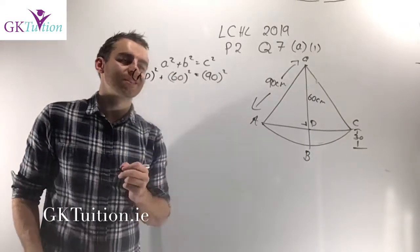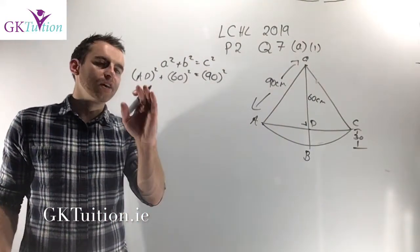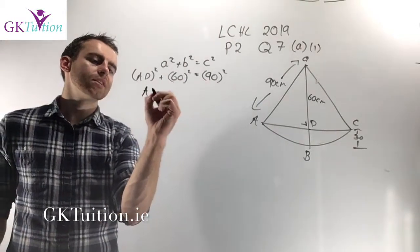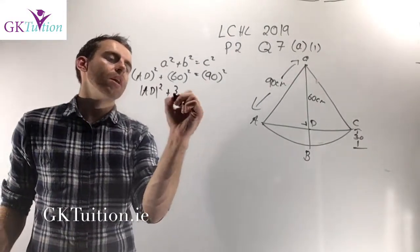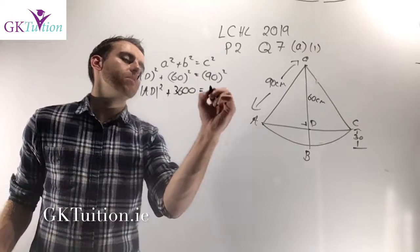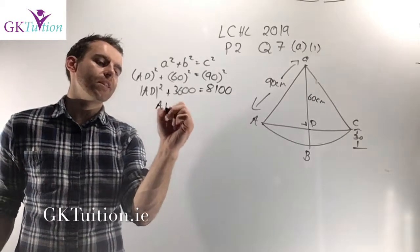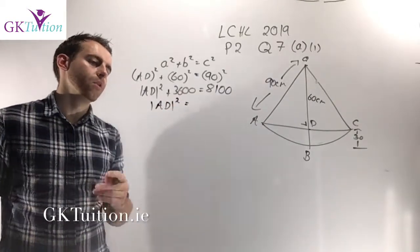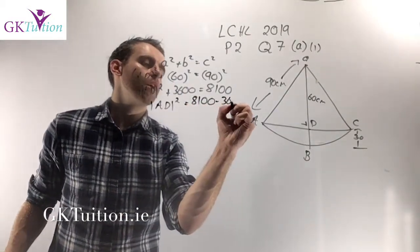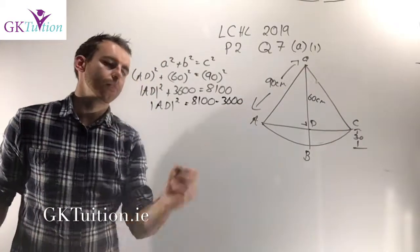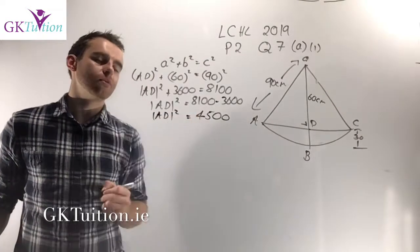So I can say AD squared plus 60 squared equals 90 squared. With one equation and one unknown I can find AD. 60 squared is 3600, and 90 squared is 8100. Subtracting 3600 from both sides gives 8100 minus 3600, which is 4500. So AD squared equals 4500.